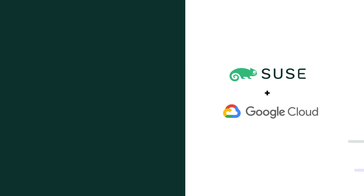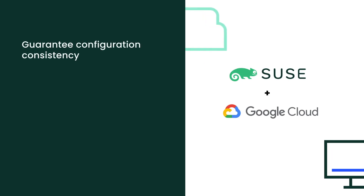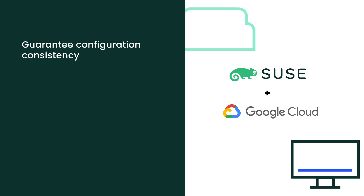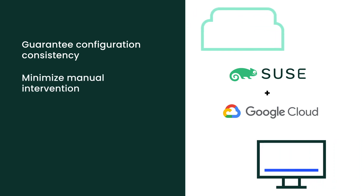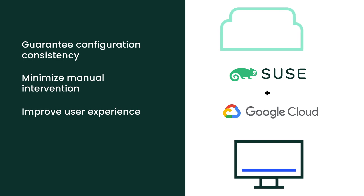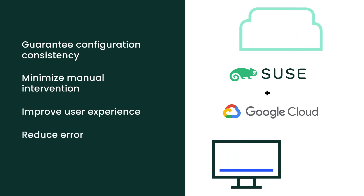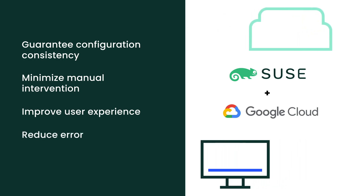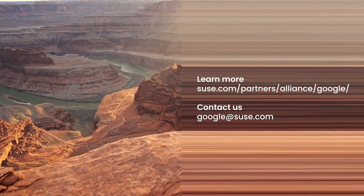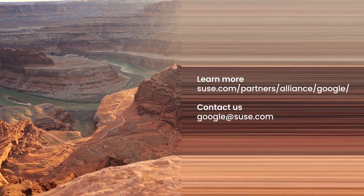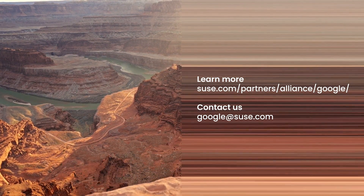With SUSE and Google, you can guarantee configuration consistency over multiple deployment phases, minimize manual intervention, improve user experience, and reduce the probability of error. Learn how to automate SAP infrastructure deployment on Google Cloud Platform with SUSE and decrease deployment time from days to hours.